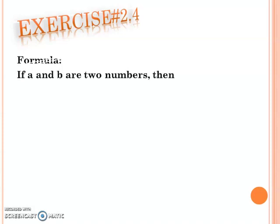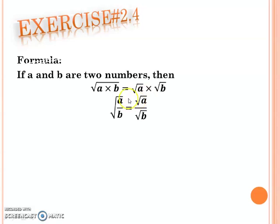First we need to explain this formula. We discussed in 7th class that when two numbers are under the radical sign and square roots are multiplied by square roots, you multiply across. When two numbers are divided under the radical sign, you can assign them to the same values.